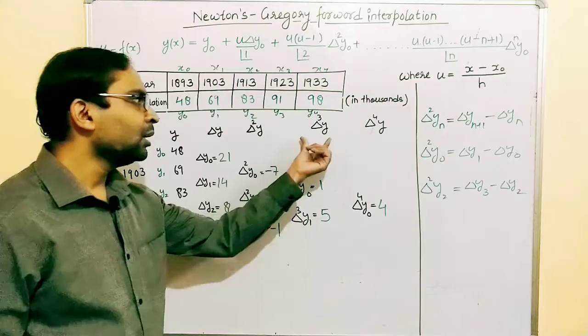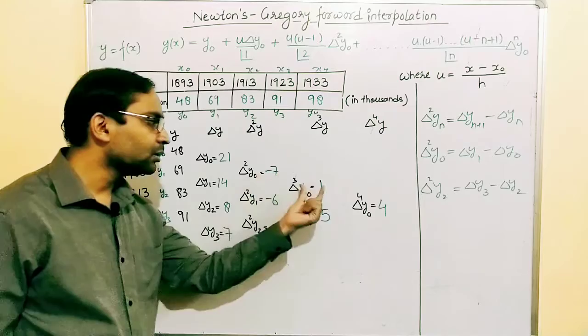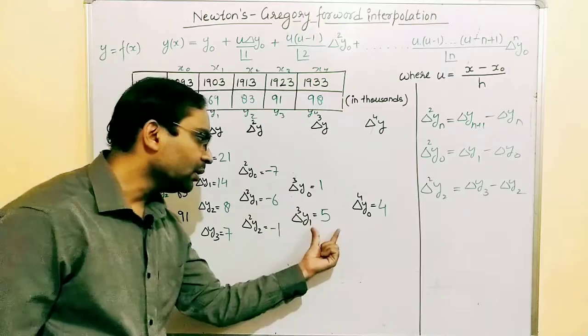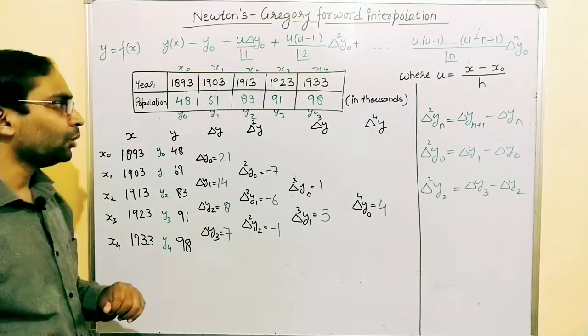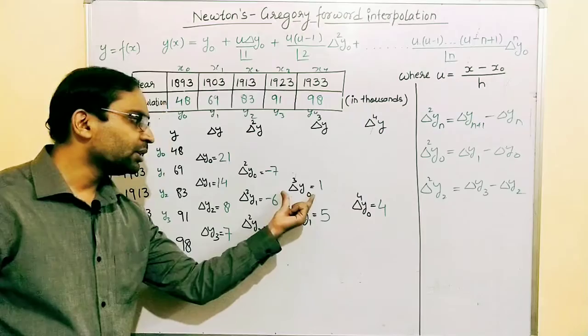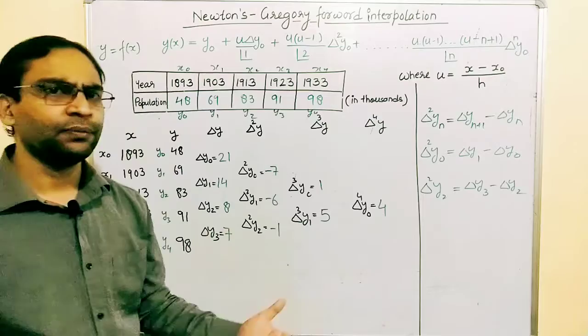For the third forward difference: Δ³y0 = Δ²y1 − Δ²y0 = −6 − (−7) = 1. Then Δ³y1 = Δ²y2 − Δ²y1 = −1 − (−6) = 5. For the last column, since we have five elements we go till n − 1 = 4. So Δ⁴y0 = Δ³y1 − Δ³y0 = 5 − 1 = 4. This completes the forward difference table construction.